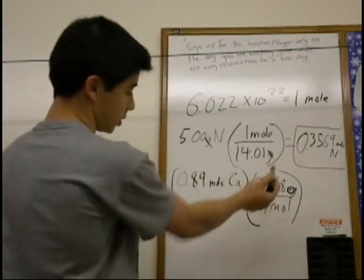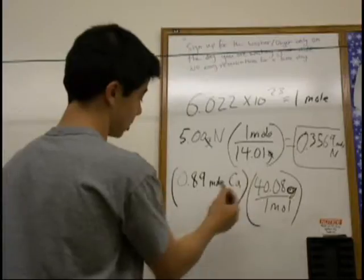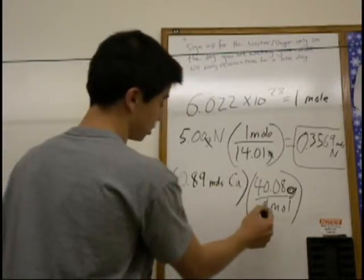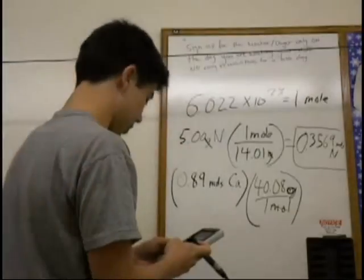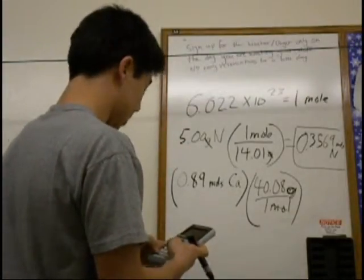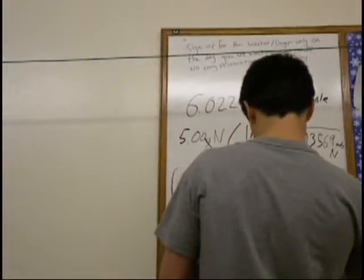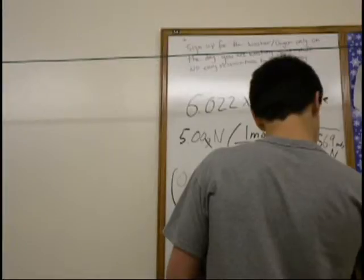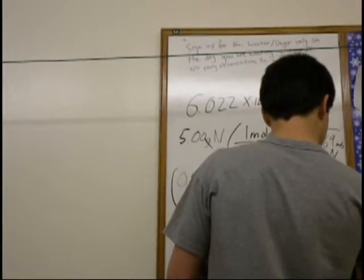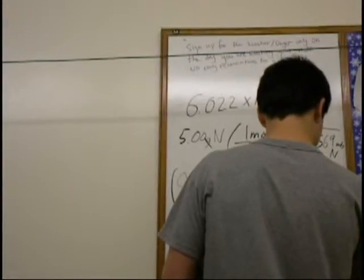So, we put grams on top, moles on the bottom to cancel the moles. The moles will cancel. We'll be left with grams. So, 0.89 times 40.08 is equal to 35.6712 grams of calcium.